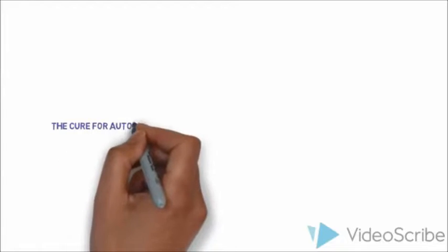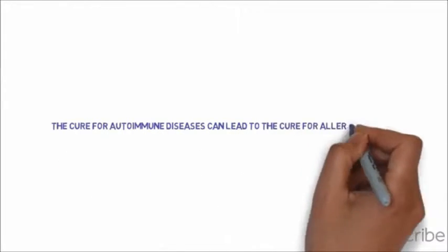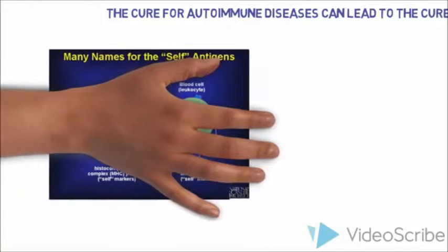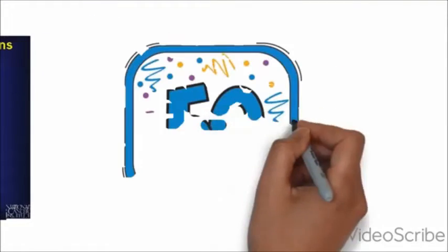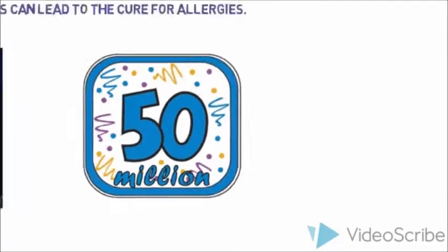The second major reason is that reaching the cure for autoimmune diseases can lead to the cure for allergies. Another way to find the cure for autoimmune diseases is that if self-antigens are identified, one can apply these self-antigens in such a way that inhibits rather than stimulates autoimmune responses. Fifty million people suffer from allergies in America, that is, 30% of adults and 40% of children.